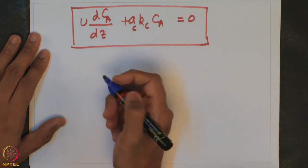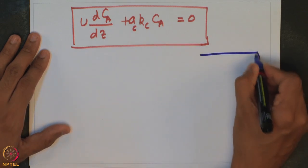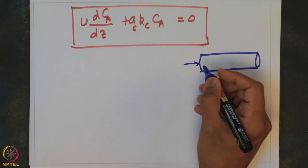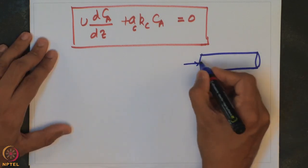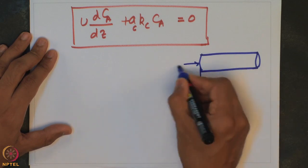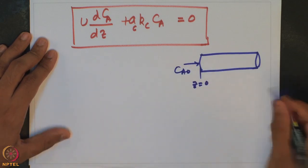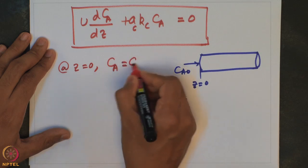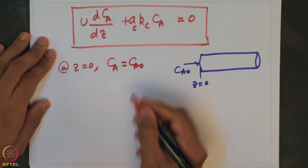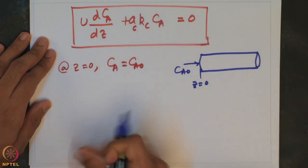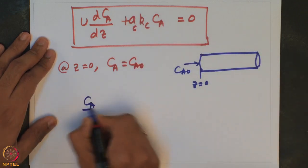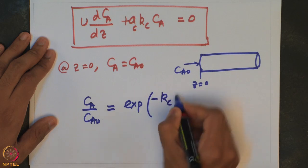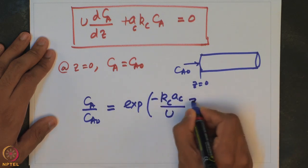The boundary conditions are: at z equals 0, Ca equals Ca0 — the concentration of species entering the reactor. Incorporating the boundary condition and solving the model equation, we find that Ca/Ca0 equals exponential of minus (kc × Ac / u) × z. This expression captures the concentration of the species in the reactor as a function of position, depending on the mass transport coefficient, surface area per unit volume of catalyst, and superficial velocity.